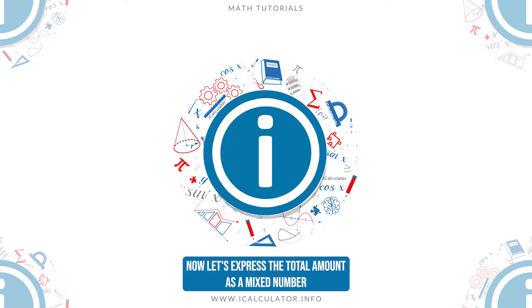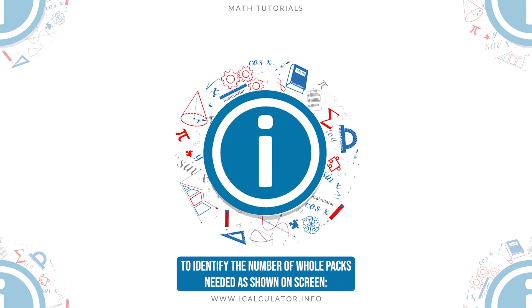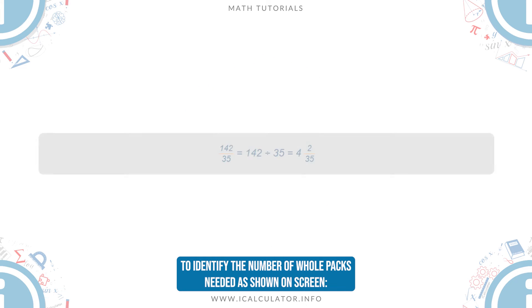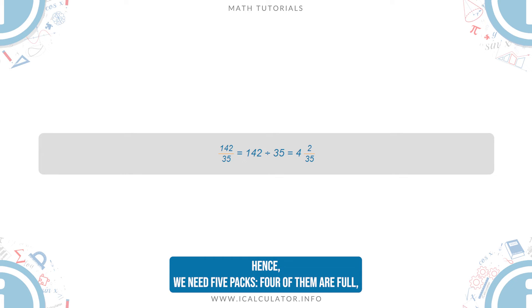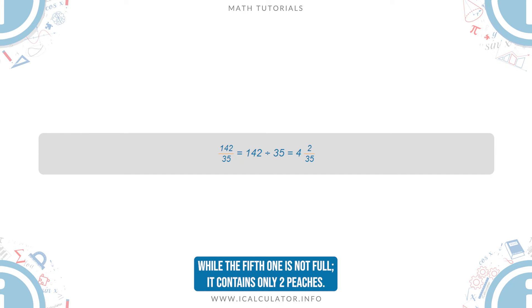Now, let's express the total amount as a mixed number to identify the number of whole packs needed, as shown on screen. Hence, we need 5 packs, 4 of them are full, while the 5th one is not full, it contains only 2 peaches.